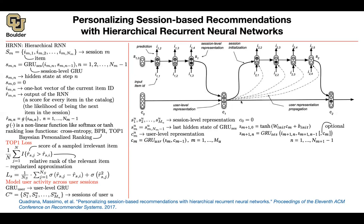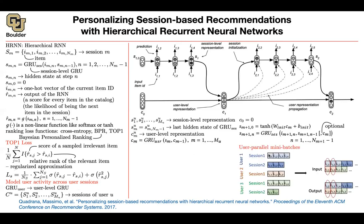c0 is zero and this is the first state for that session. From there on you have the option to include c_m as additional inputs — in this case c1 — concatenated as additional inputs. So there is going to be a user-level GRU giving you c0, c1, c2, etc., and there is going to be a smaller session-level GRU per each session. This is how you model long interactions — there's a handshake between the session-based recurrent neural network and the user-based recurrent neural network.